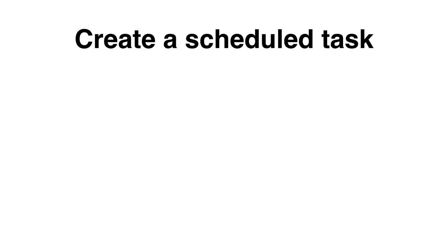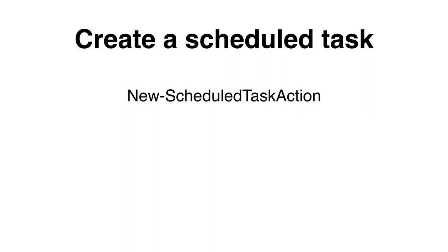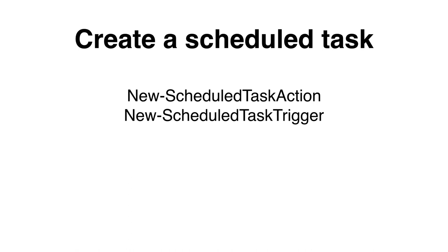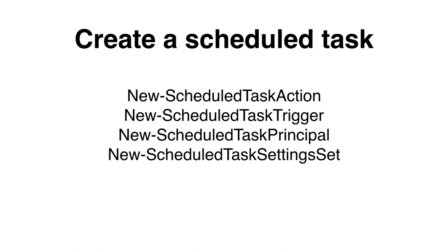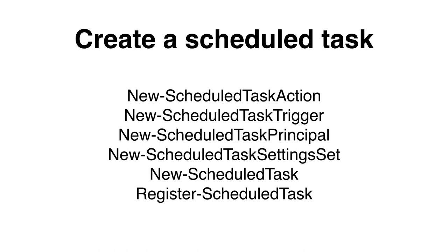Before we can create a scheduled task, we need to use a couple of cmdlets to prepare it. We need to use the New-ScheduledTaskAction cmdlet to set the program or command we would like to run. The New-ScheduledTaskTrigger cmdlet sets up when the task should run. With New-ScheduledTaskPrincipal, we can specify a specific person, group, or identity the task should run as. The New-ScheduledTaskSettingsSet cmdlet provides additional settings. Then New-ScheduledTask combines all of these into one task, and Register-ScheduledTask registers and enables it with the Windows Task Scheduler.